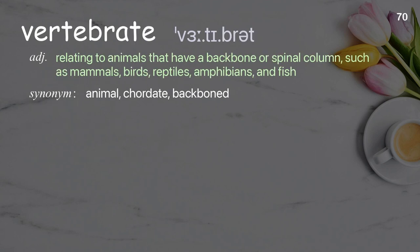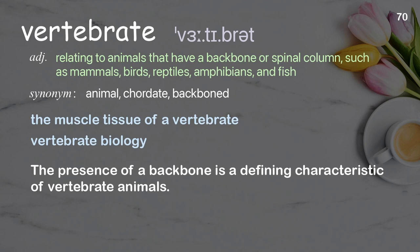Vertebrate. Relating to animals that have a backbone or spinal column, such as mammals, birds, reptiles, amphibians, and fish. Examples: the muscle tissue of a vertebrate, vertebrate biology. Sentence: The presence of a backbone is a defining characteristic of vertebrate animals.